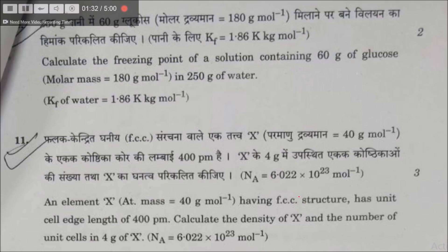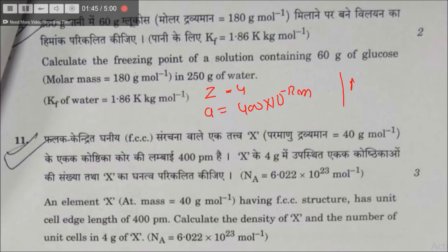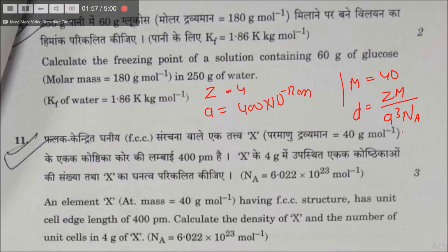For an FCC unit cell, Z = 4, edge length A = 400 × 10⁻¹² m, and molar mass = 40. Density D = ZM/A³. Just put in these values and you will get your answer — it is a very easy question worth three marks.